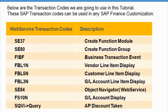Now we are going to cover the transaction codes used in this tutorial. These SAP transaction codes can be used in any SAP finance customization. SE37 is where you will be creating function modules. You need a function group before you create a function module — it's like a parent-child relationship.